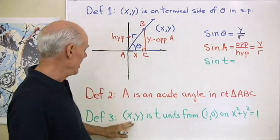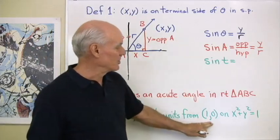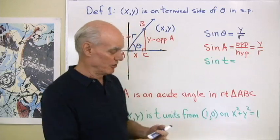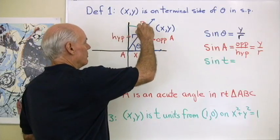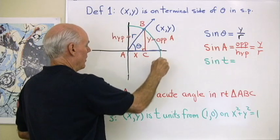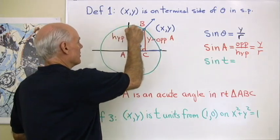Now for my third definition, XY is T units from (1,0) on the unit circle. So I'm going to draw in my unit circle and I'm going to have it go through that point. This might not be too good a circle. Yeah, that looks pretty good.